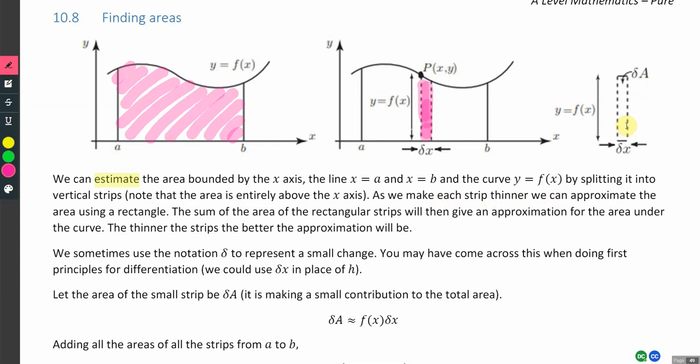On the right hand side, one of the example strips has been picked out and we've turned it into a rectangle. So rather than having a slanted top, we're just making it a rectangle. The height will be the y-coordinate of the point on the curve, and the width will be delta x. The sum of the area of the rectangular strips will then give us an approximation for the area under the curve.